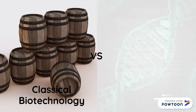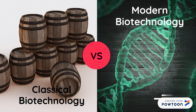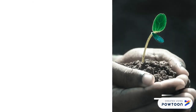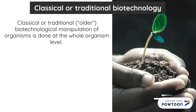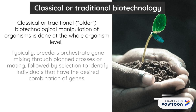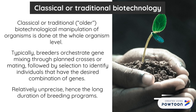Classical versus modern biotechnology. Classical biotechnology involves manipulation of organisms at the whole organism level. Typically, it is done through planned process or mating, which is relatively imprecise and time-consuming.